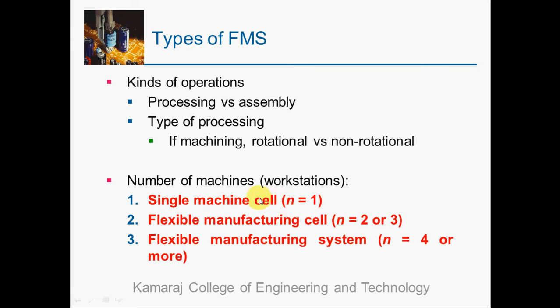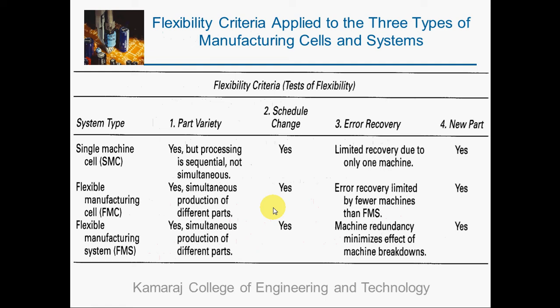In a Single Machine Cell, the number of CNC machines equals one. In an FMC, there are two or three CNC machines. In a Flexible Manufacturing System, there are four or more CNC machines.